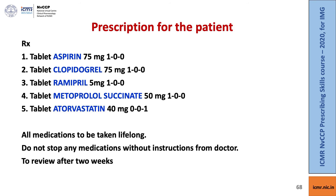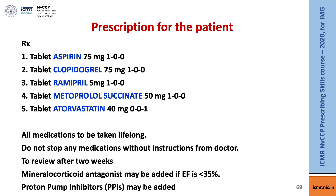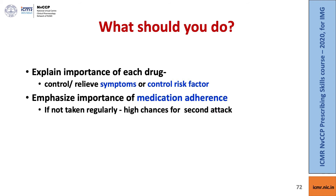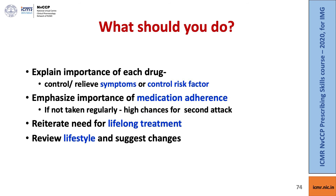This patient will have to come back after two weeks. We can also add a mineralocorticoid antagonist, particularly if the ejection fraction is less than 35%. Proton pump inhibitors are useful to avoid gastritis or peptic ulcer disease. Now we're going to explain the importance of each of these drugs and tell them that these drugs help to either control or relieve symptoms or control the risk factors that have caused the coronary artery disease. We need to emphasize the importance of medication adherence, telling them that if these are not taken regularly, there is a very high chance of a second myocardial infarction. The patient has to take lifelong treatment. Review lifestyle and suggest changes for this patient.